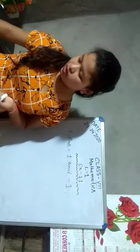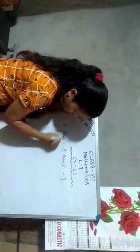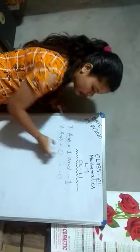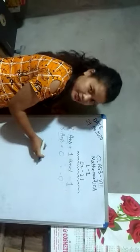Then Question No. 8: write the rational number which is equal to its additive inverse. The answer will be 0 because we don't write minus 0. The additive inverse of 0 is 0. So the answer is 0.